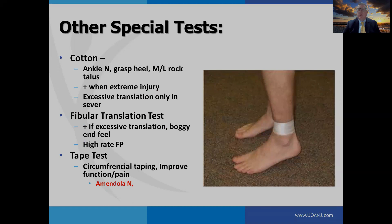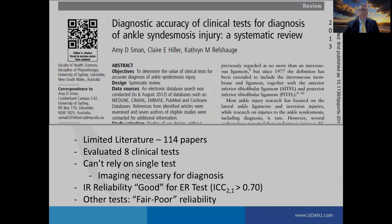Other tests including the cotton test, fibular translation test, and tape test are frequently used but don't often have good performance on evaluations. Amy Swan published a paper in 2013 in the British Journal of Sports Medicine reviewing 114 papers and eight clinical tests for syndesmotic injury. She found the dorsiflexion external rotation test performed with good reliability, but you can't rely on a single test — imaging is necessary for diagnosis. The other tests had fair to poor reliability.